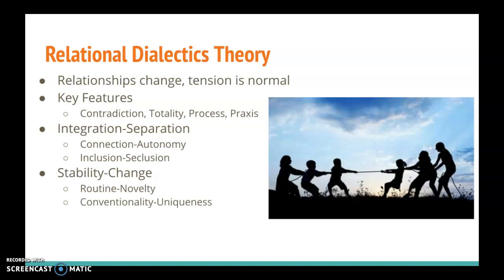Externally, a couple might experience the tension between conventionality and uniqueness. A couple might want to be a very traditional couple that dates for a few years, gets engaged, gets married, has children, etc. But a couple also wants to be their own thing — they don't want to look like every other couple you see in a magazine. So there's that tension between wanting to please others and what they think your relationship should look like, versus wanting your relationship to be unique to you and your partner.